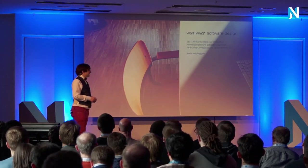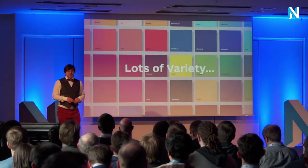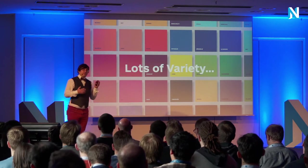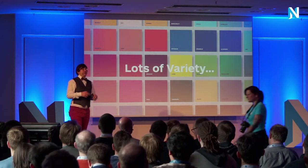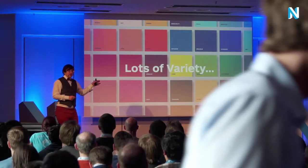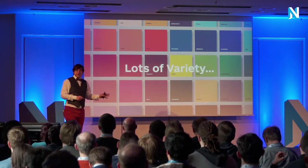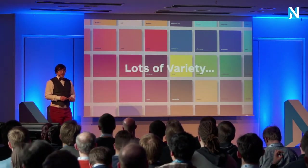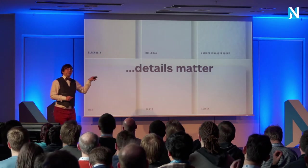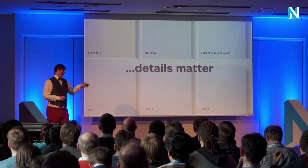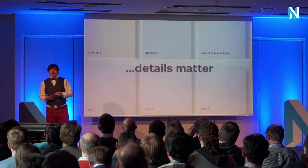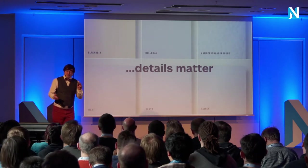Everyone knows the typical paper, but there is lots of variety. In this project I actually learned what paper can be and how many different details and variants of paper there are. This is one example of a paper that exists in over 100 different colors. But at the same time, in paper, details matter. Those are all different kinds of papers, so you have to strike this balance between a huge amount of variety and looking at the details.